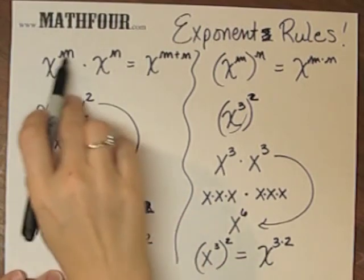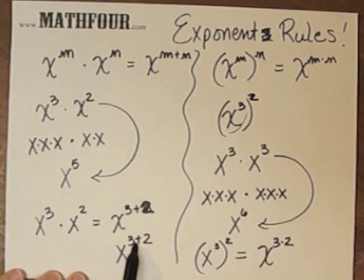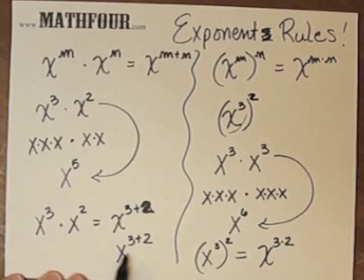So my rules don't have any m's and n's in them. They actually have a 3 and a 2. So I can remember my rule with 3's and 2's.